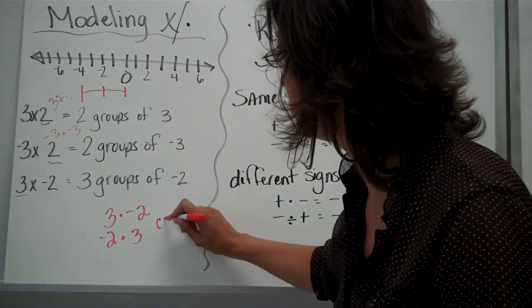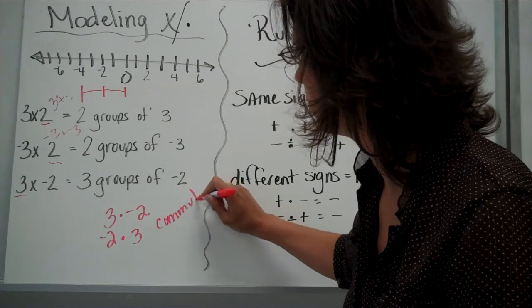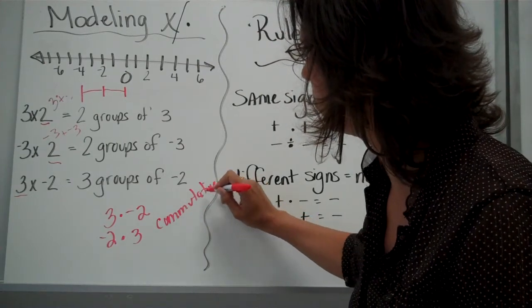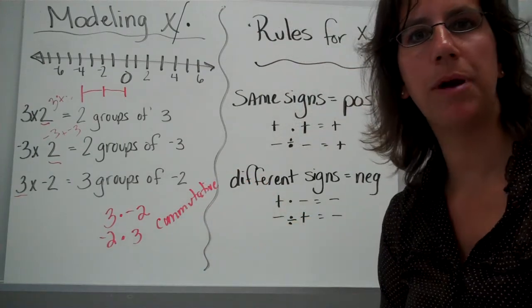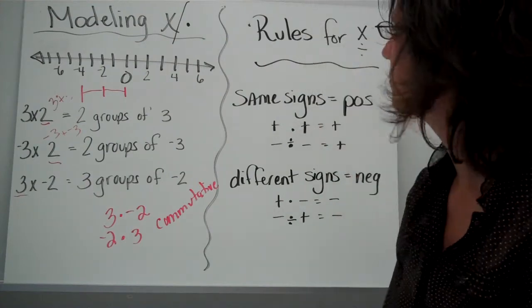It is the commutative property. You can change the order of a multiplication problem, and it doesn't change your answer.